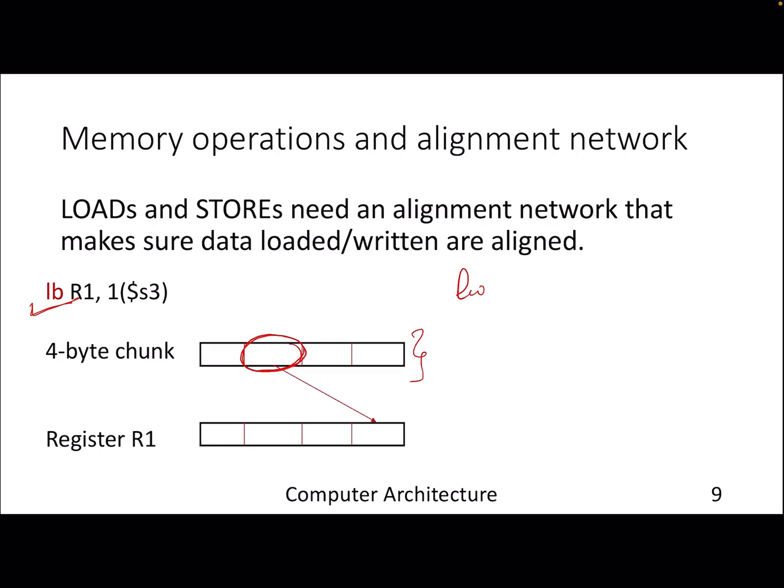So you are using an instruction lb to load a particular byte. Now this byte, let's say the value that is stored here is one. You need to store it in register because you are loading from memory into the register. You need to make sure that this particular one actually gets into the LSB.